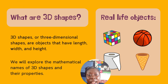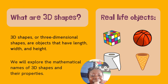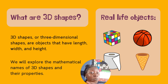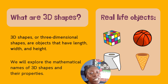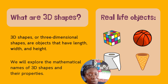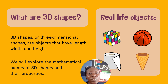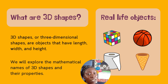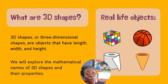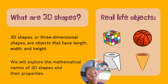What are 3D shapes? 3D shapes, or three-dimensional shapes, are objects that have length, width, and height. We will explore the mathematical names of 3D shapes and their properties.